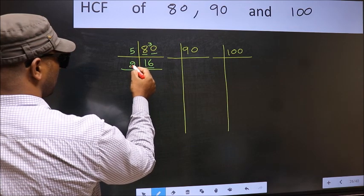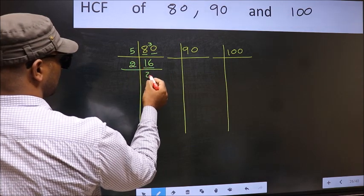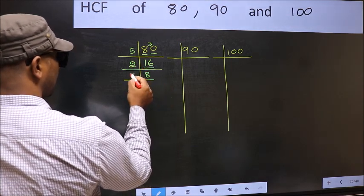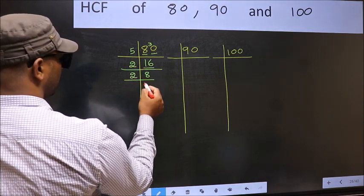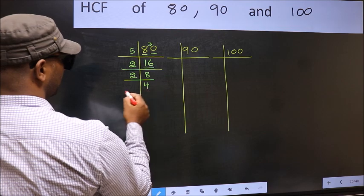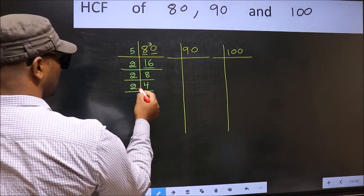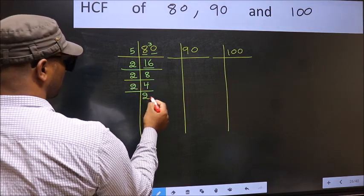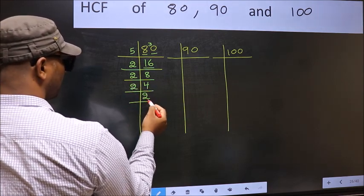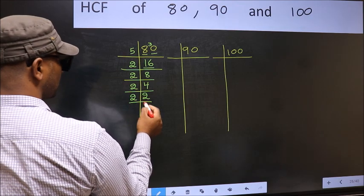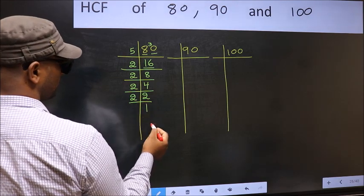Now 16 is 2 eights; 8 is 2 fours; 4 is 2 twos. Now we have 2, which is a prime number, so 2 once 2. That completes the prime factorization of 80.